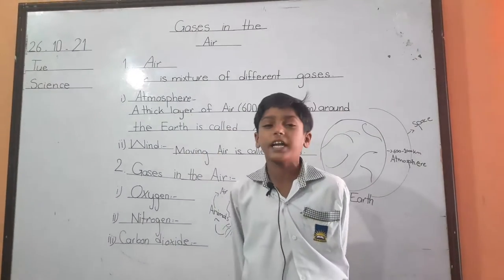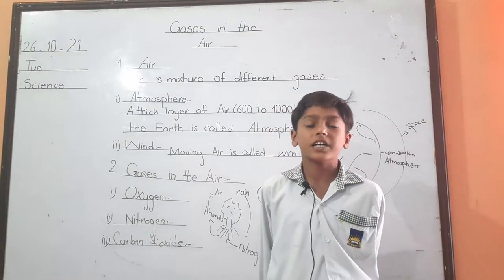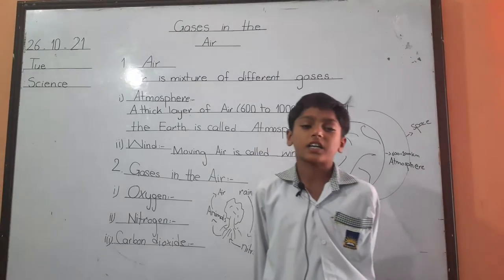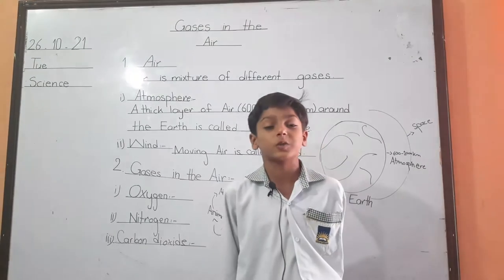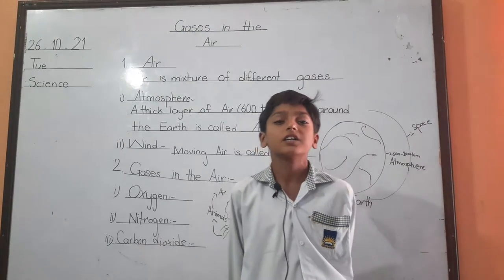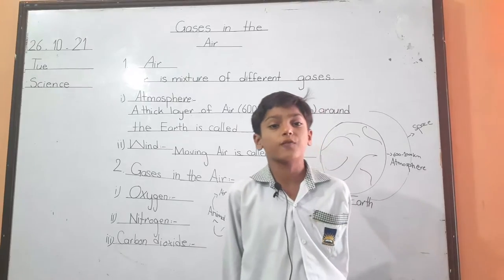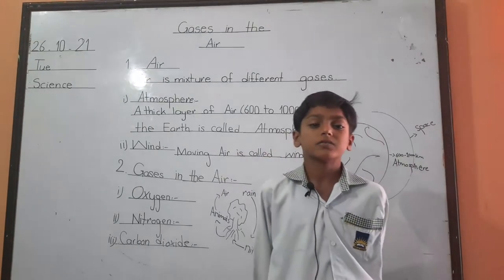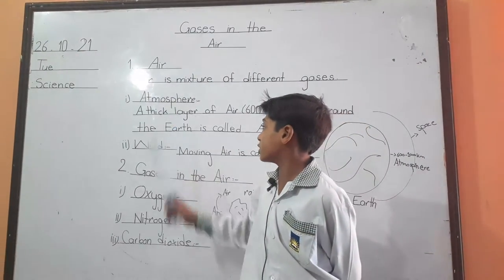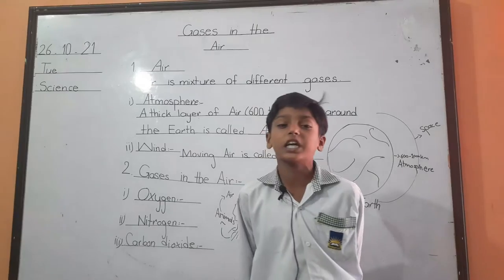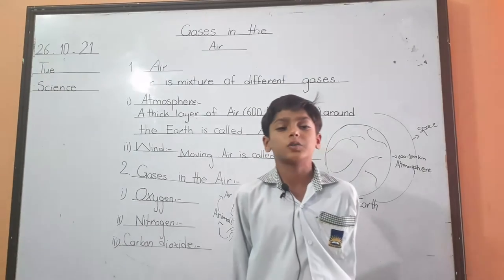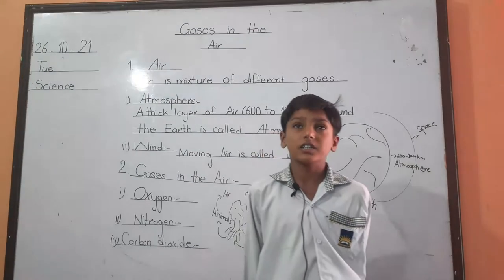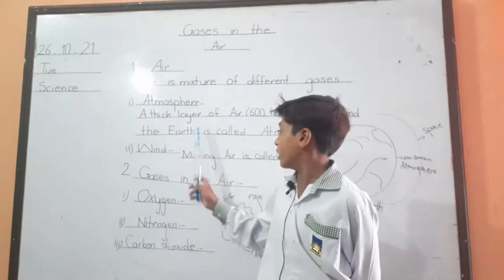Air is the mixture of some gases. Air is present in the soil and water. Air is very important for all living things. A thick layer of air, 600 to 1,000 km, is called the atmosphere.